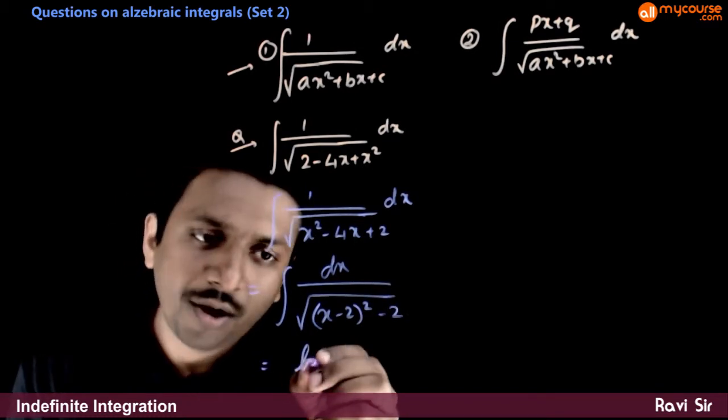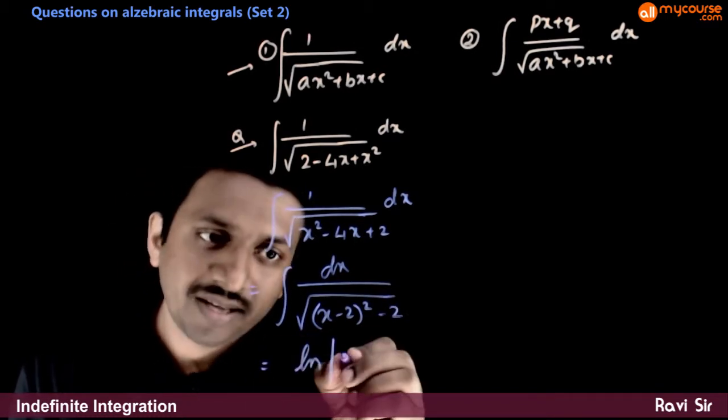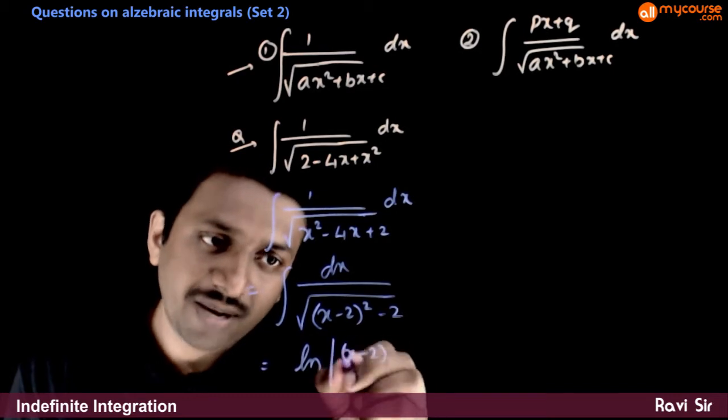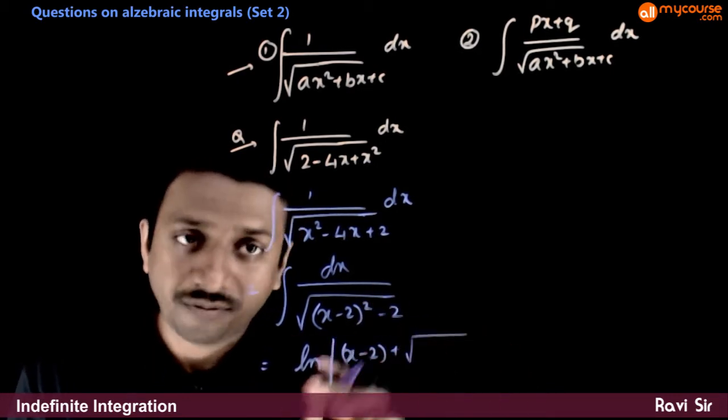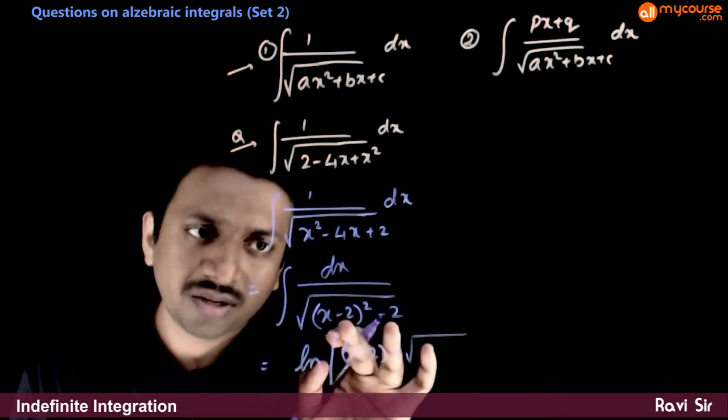So, what is the formula? Log mod x—in the place of x, you have x minus 2—plus root of whatever is there in the root.